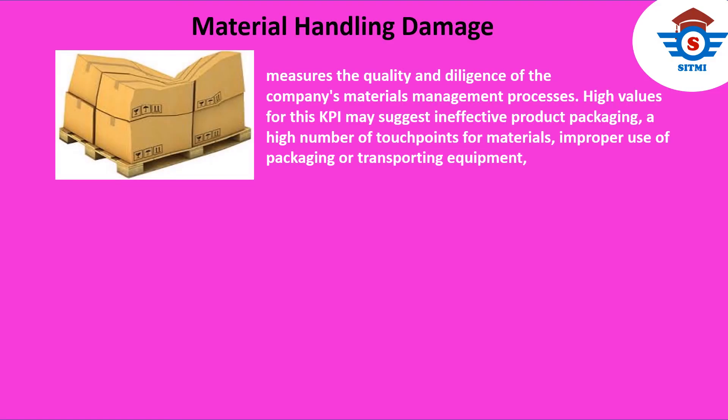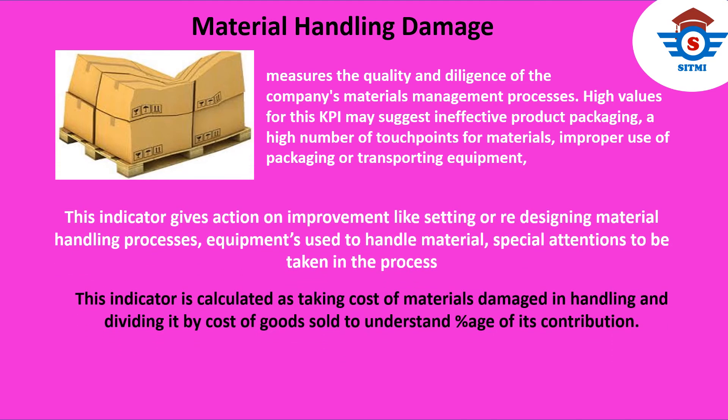Our next metric is Material Handling Damage. This indicator defines the material handling performance of a manufacturing firm. It provides action on improvement, such as redesigning material handling processes or equipment used to handle materials, or giving special attention to material handling processes. This indicator is calculated as: Cost of Materials Damaged in Handling divided by Total Cost of Goods Sold.